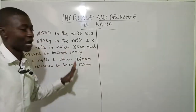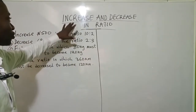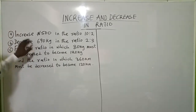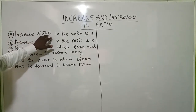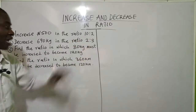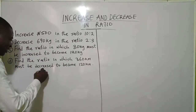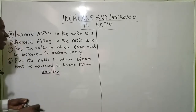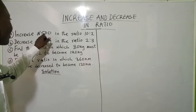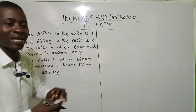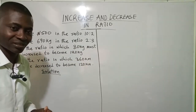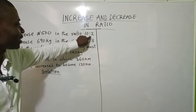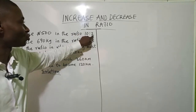On our board we have four examples we are using to demonstrate how we increase and decrease in ratio. The first one says that we should increase 500 in the ratio 10:2. Now what is the key to that? When you hear 'increase in ratio' — increase 500 in the ratio 10:2. Look at the ratio 10:2.